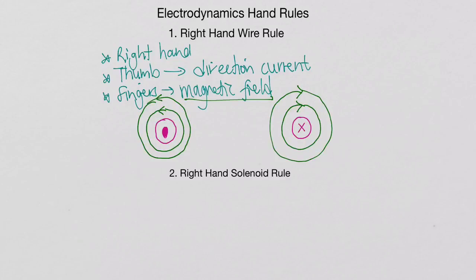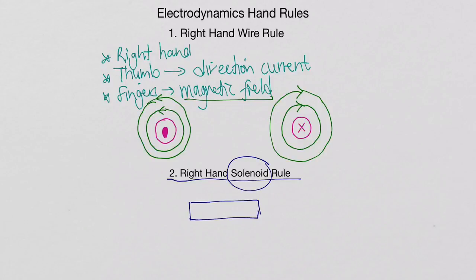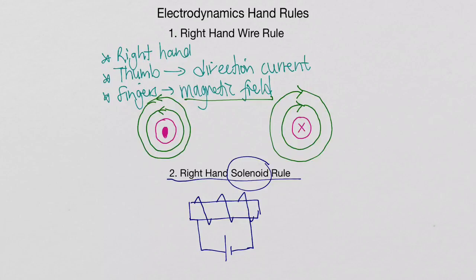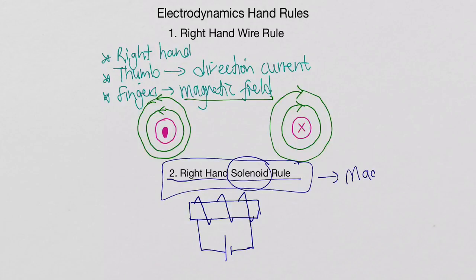The next rule is the right hand solenoid rule, and we use this to determine the direction of a magnetic field when we have a solenoid. To quickly recap, a solenoid is basically a piece of iron with a copper coil around it. If we connect a battery to this copper coil, and current moves through the copper coil in the solenoid, this solenoid becomes a magnet — an electromagnet — and we use this right hand solenoid rule to determine the direction of this magnetic field.